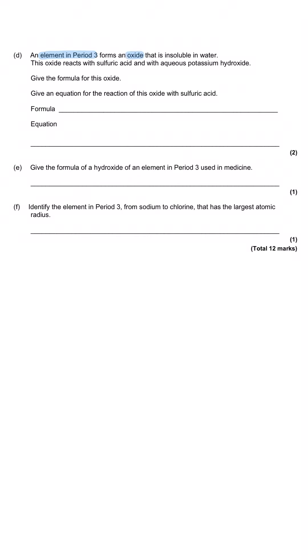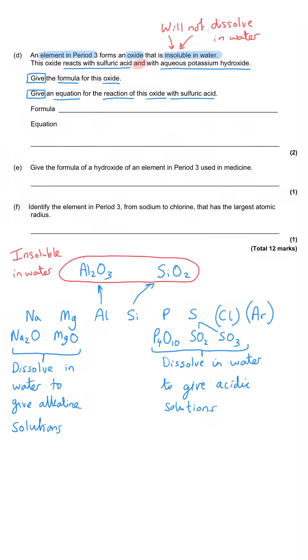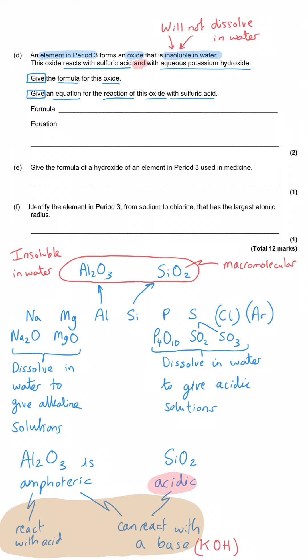An element in period three forms an oxide that is insoluble in water. This oxide reacts with sulfuric acid and with aqueous potassium hydroxide. Give the formula for this oxide and give an equation for the reaction of this oxide with sulfuric acid. Now this is a little bit of a sneaky question because there are actually two period three oxides that are insoluble in water: silicon dioxide that we've just been thinking about which is that macromolecular structure, and aluminium oxide. Now of those two, only one of those oxides is going to react with both sulfuric acid, in other words the oxide can behave as a basic oxide, and with potassium hydroxide, which means that this oxide must be capable of behaving as an acid as well. Silicon dioxide can react as an acid so it would react with the potassium hydroxide, but only aluminium oxide would be capable of reacting with both.